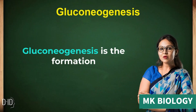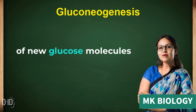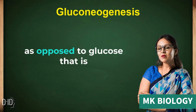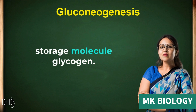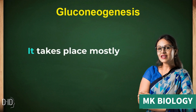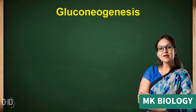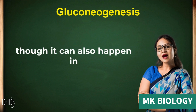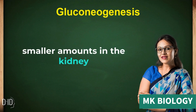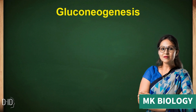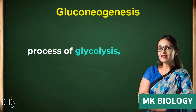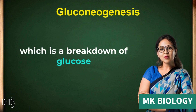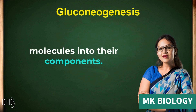Gluconeogenesis is the formation of new glucose molecules in the body, as opposed to glucose that is broken down from the long-storage molecule glycogen. It takes place mostly in the liver, though it can also happen in smaller amounts in the kidney and small intestine. Gluconeogenesis is the opposite process of glycolysis, which is the breakdown of glucose molecules into their components.